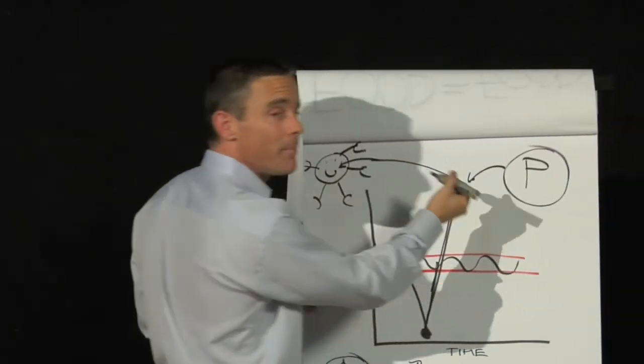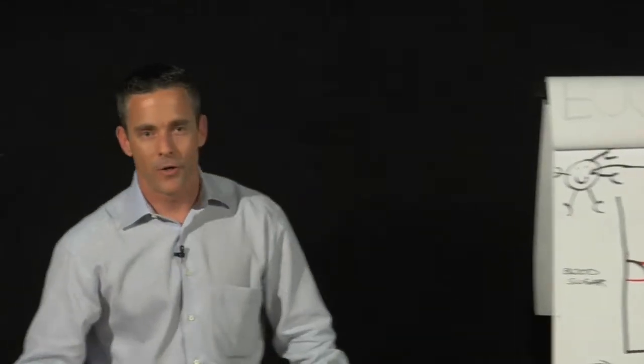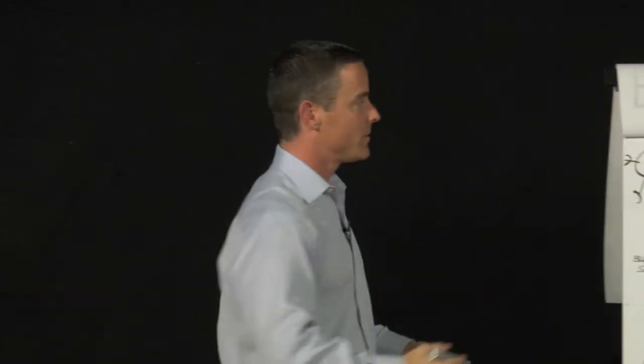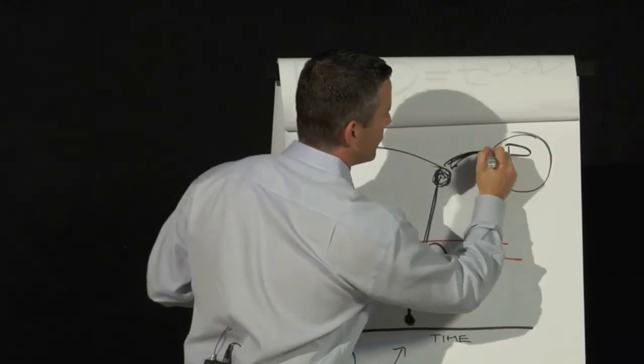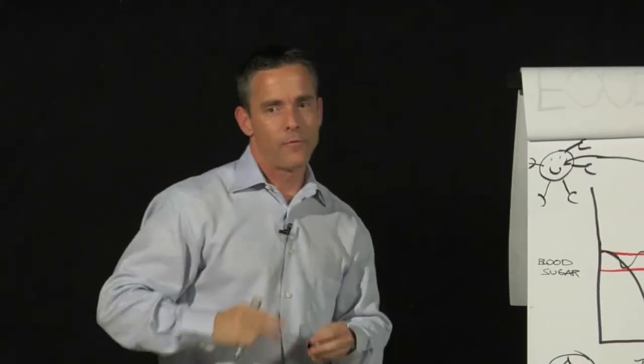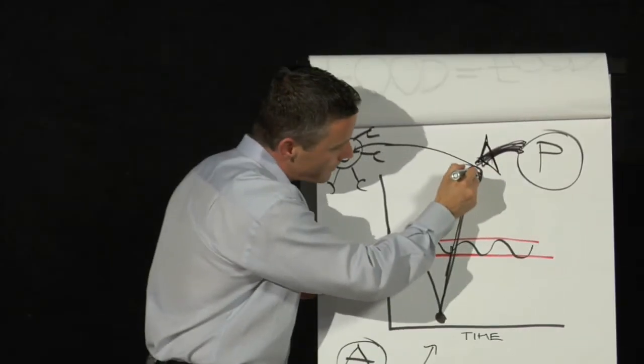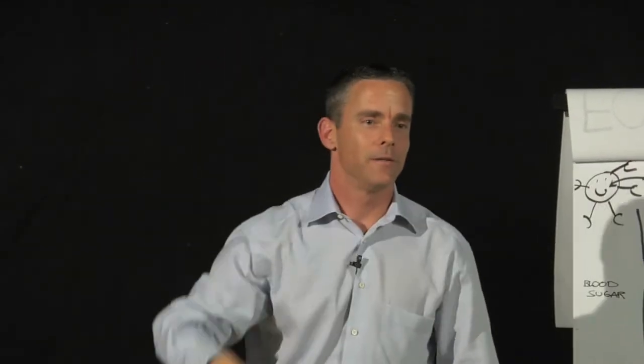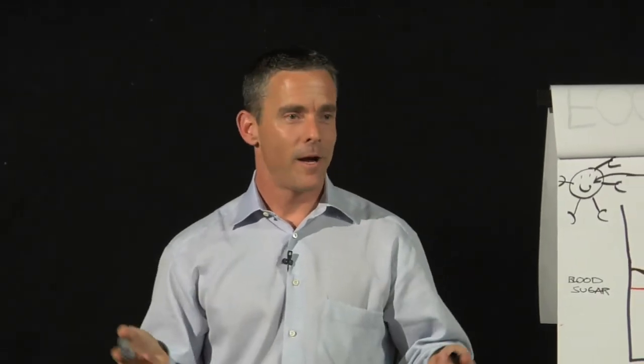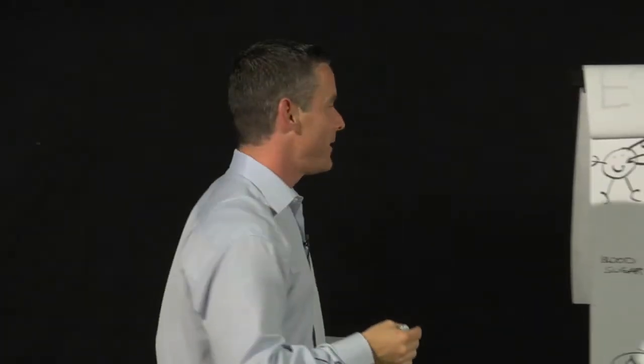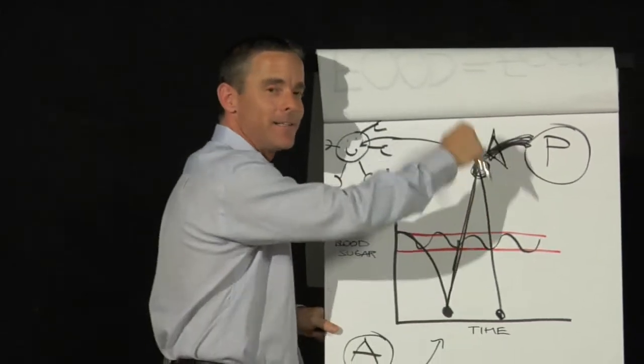But when your blood sugar shoots up this high, the pancreas goes, whoa, that's a lot of blood sugar. Let's bring that down. That's not good. So it says, okay, here we go. Produce more insulin. But the body tends to then overreact sometimes, and instead of leveling you back out, bam, you're back down here. Anybody in here ever had lunch, and about an hour or two later they were just ready to take a nap? We've all been there. Just drooling over the keyboard, whatever it is, right?